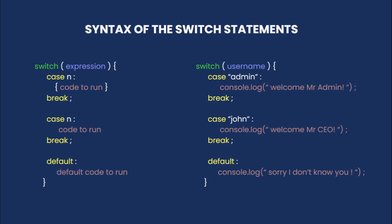Then we have the second case, which is 'John'. So if this case matches, we console.log 'Welcome Mr. CEO' or whatever, then we have our break. And finally, we have our default case — if none of these cases match our username, so if our username is neither admin nor John, we console.log 'Sorry, I don't know you'. So now let's practically see the switch statements in JavaScript.